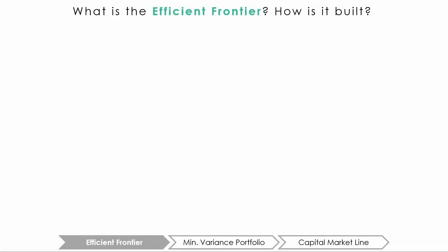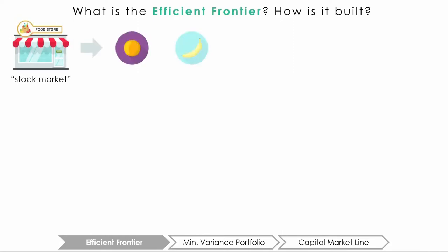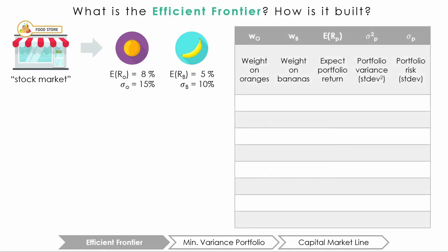So what is the efficient frontier? Let me explain it through an example. Suppose there are only two risky assets available in the market: oranges and bananas. Oranges have an expected return of 8% and a standard deviation of 15%, and bananas have an expected return of 5% and standard deviation of 10%. Let's create a table to record the expected return and variance of the portfolio with different weights in oranges and bananas. As investors, we would like to know how much of our funds to invest in oranges and how much to invest in bananas.